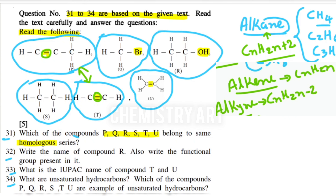P and T are of the same homologous series. For the others: Q has bromine but no other bromine compound is present; R has OH but no other OH compound is present; and U has a double bond but no other double-bonded compound is present. So the answer to question 31 is P and T.